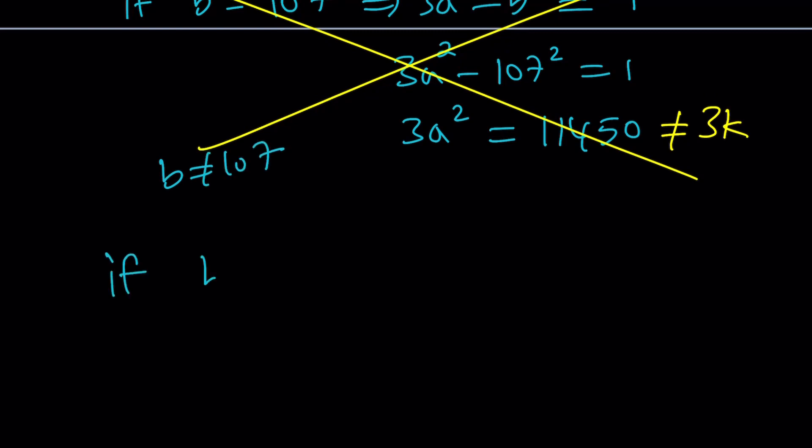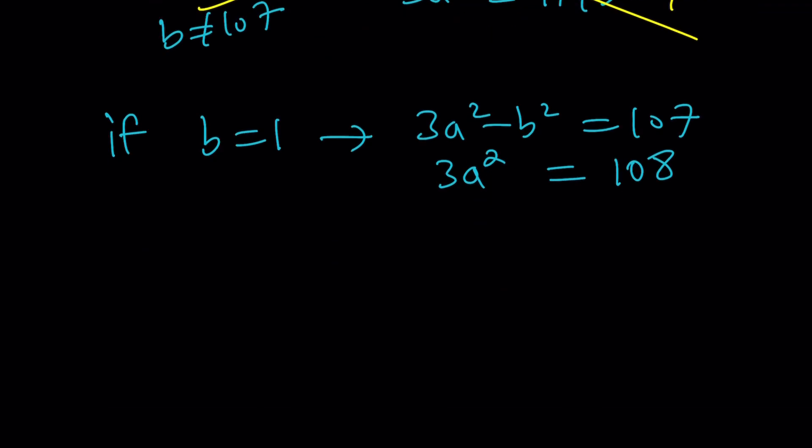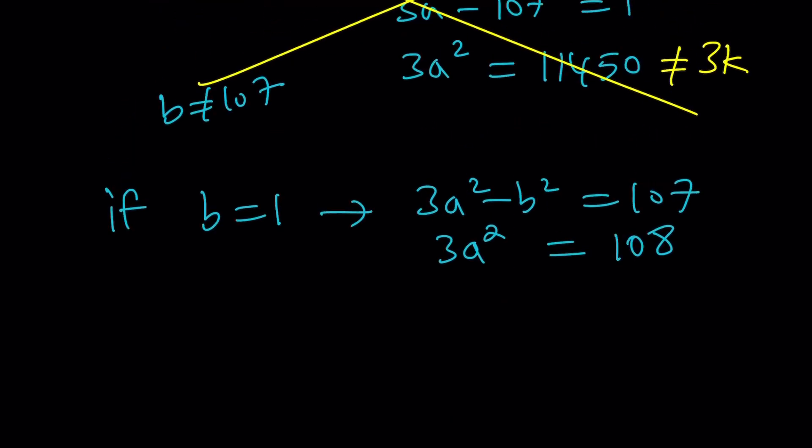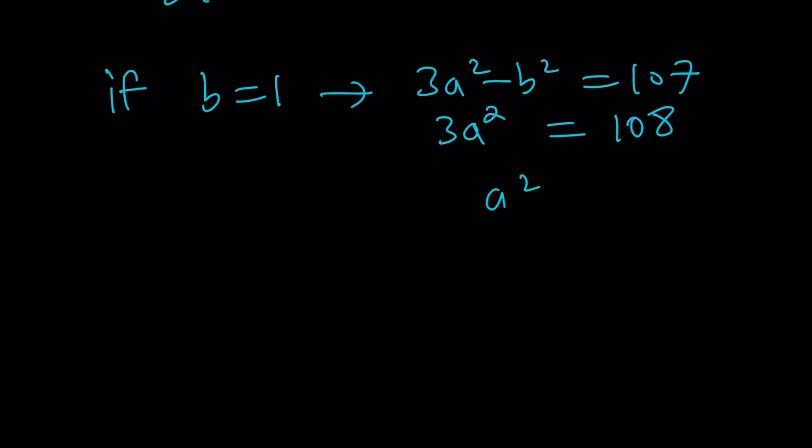If B is 1, then we get 3A squared minus B squared is 107. We do know that B is equal to 1. So we're going to replace B with 1 and that's going to give us 3A squared is equal to 108. Squaring 1 is pretty easy, right? Compared to 107. And then from here, A squared becomes 36. Since A is positive, A equals 6 is a solution.